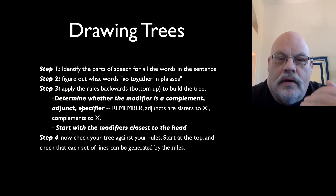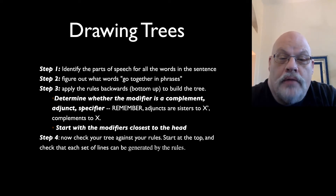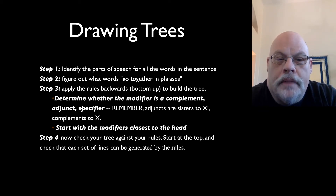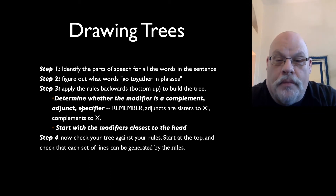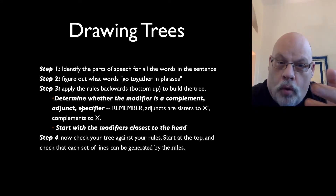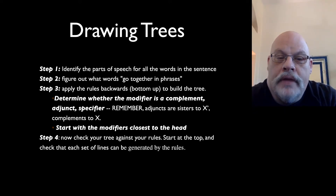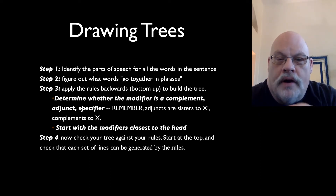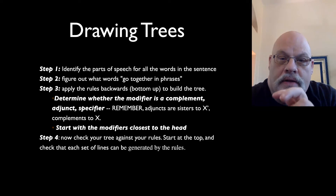First of all, just like when you're drawing a tree with a phrase structure rule, you want to identify the parts of speech for all the words. And you do want to figure out what goes together in phrases, just like you do with phrase structure rules. You're going to apply the rules from bottom to top, or you can also do it from top to bottom, but the order of things is effectively reversed. You've got to determine whether each modifier to a head is a complement, an adjunct, or a specifier, and then you have to draw it in the right way.